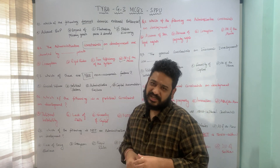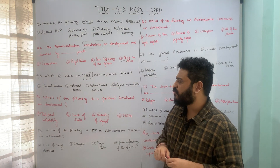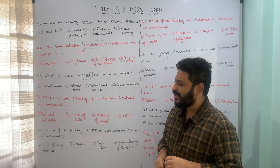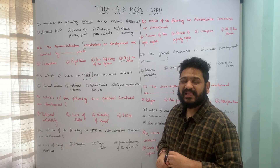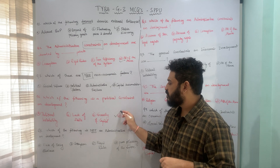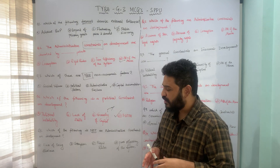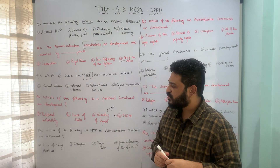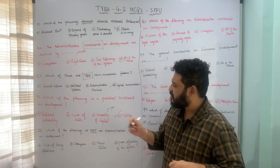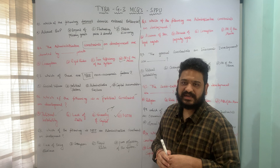The next question asks: which of the following is a political constraint on development? The options are: A) political instability, B) lack of skills, C) scarcity of capital, and D) none of the above. Scarcity of capital is a capital constraint, lack of skills relates to inappropriate technology. Political instability is a political constraint, so option A is the correct answer.